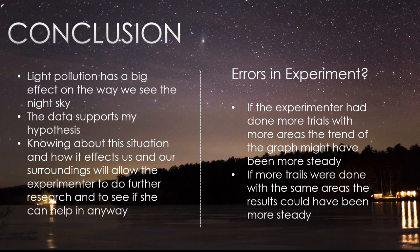Errors in the experiment: if the experimenter had done more trials with more areas, the trend of the graph might have been more steady. Also, if more trials were done with the same areas, the results could have also been more steady.